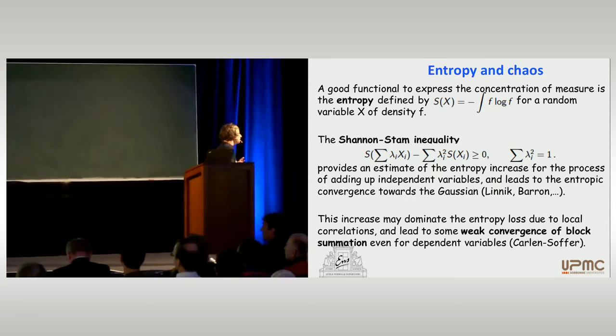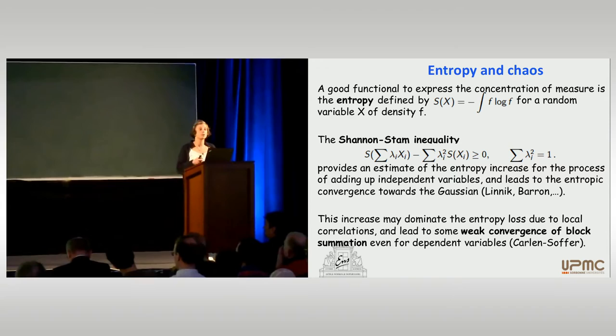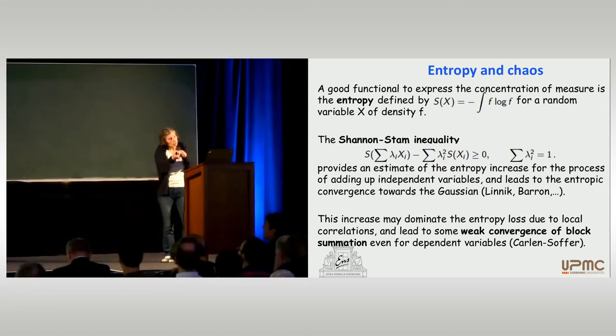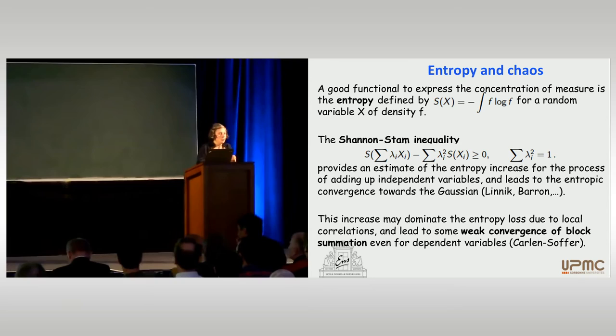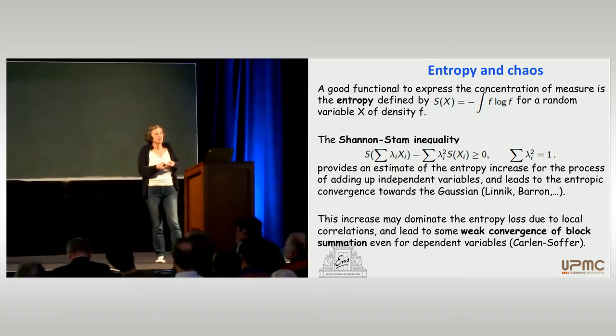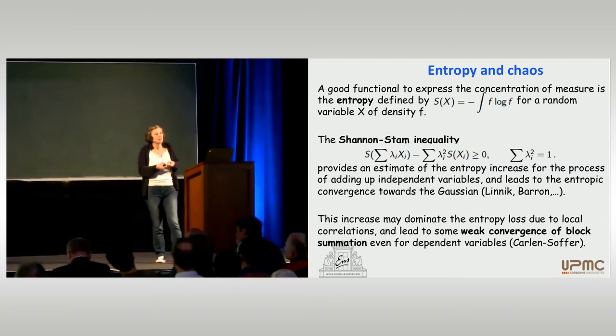So if you start from independent variables, you can prove that the convergence to the normal law is quantified and is satisfied in some entropy sense. The fact that you are able to quantify this convergence is actually important if you would like to control the convergence in the case of dependent variables. Not only will you converge to the Gaussian, but you have something to measure the distance to the Gaussian. This is proved for spin systems, for instance — the fact that you have an estimate for this entropy increase will be able to balance the fact that you have some entropy loss due to the correlations.